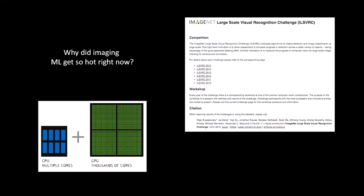Why did imaging machine learning get so hot right now? We really have two things to thank for that. One is that all the computer technology created for the video game industry — creating really, really fast graphical processing units — turns out those processors are particularly well suited to this process of machine learning. All the money and innovation poured into Nvidia and companies like Intel and ATI is now being leveraged for this machine learning revolution.